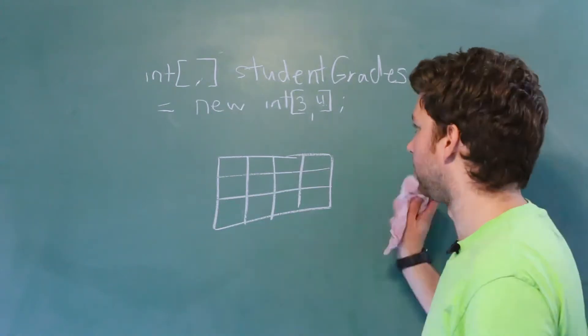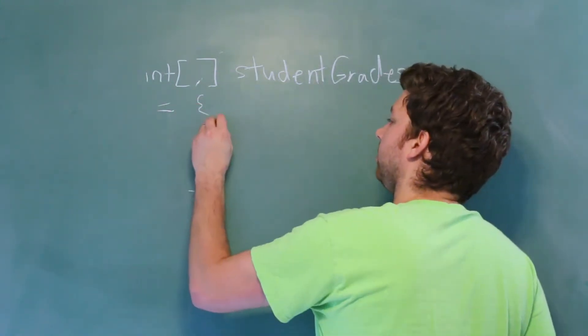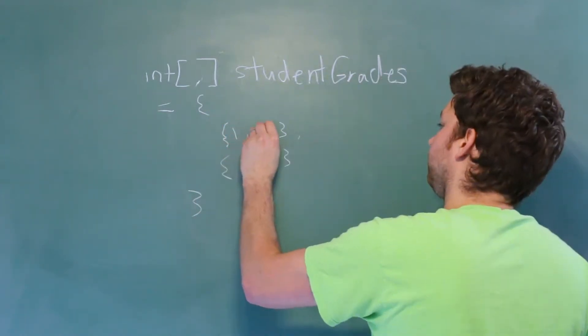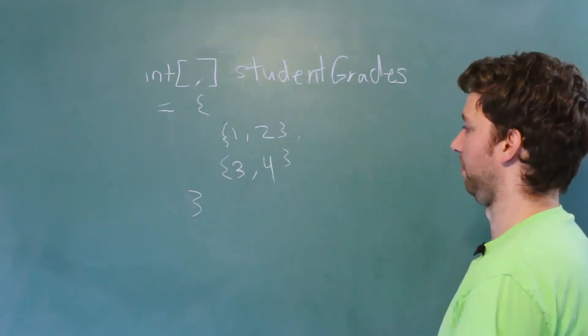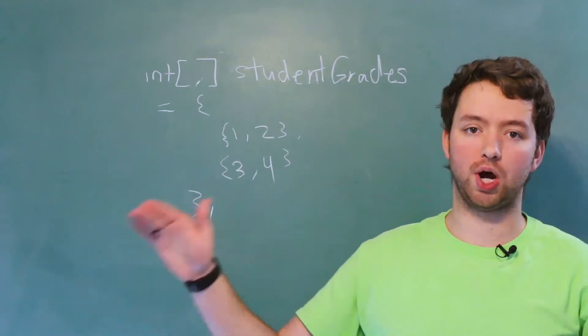Now you can also initialize it with values right away. So that's going to look like this: just equals curly brace. And then you have to put a series of arrays in here. So we could do one, two, three, four, or something like that. I'm pretty sure that's the syntax, but we'll get hands-on in the next video if you want to know how to do that.